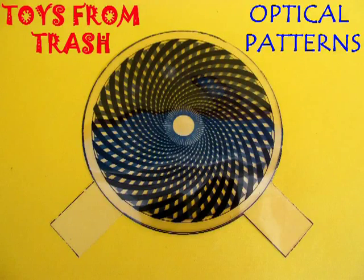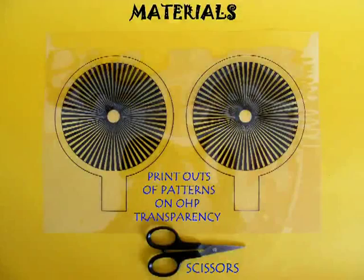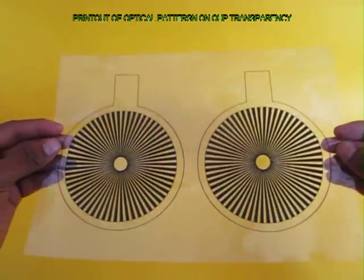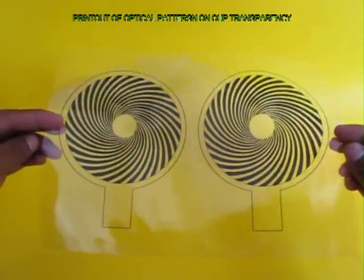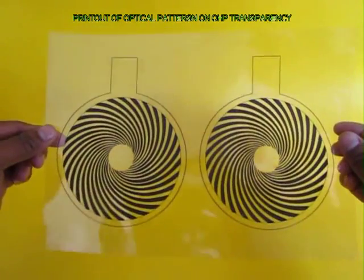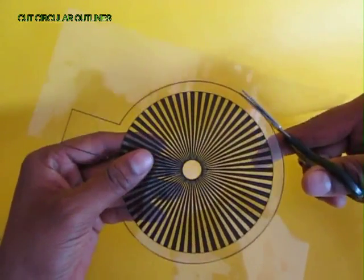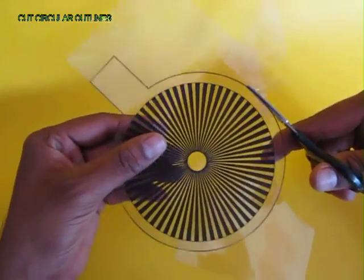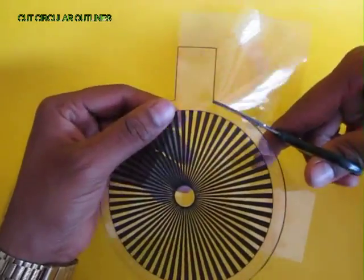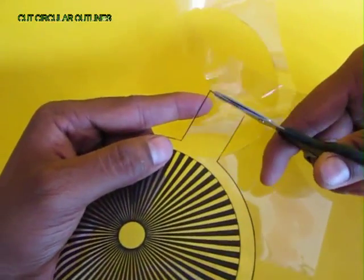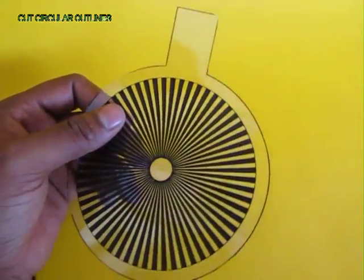You can make very beautiful optical patterns using transparencies. You take a printout of these transparencies — one is a radial pattern, the other is a spiral pattern, and the third one is a wavy pattern. These are like table tennis rackets with a circle and a handle, and you cut on the outline: the circle and the rectangular part which will act like a handle.